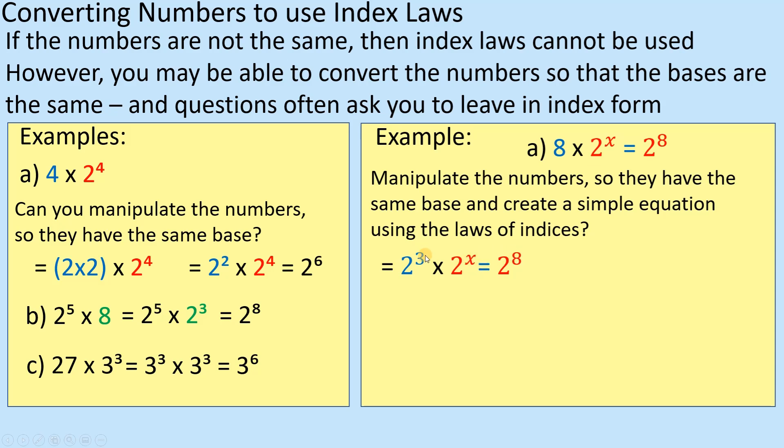Now the rules of indices is that I add these two to give you this. So I can actually drop this bit at the bottom, because actually what I'm saying is 3 plus x is equal to 8, isn't it? 3 plus x is equal to 8 in terms of the indices rules.